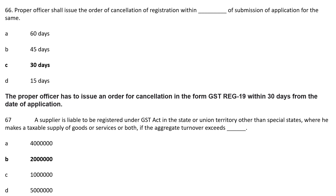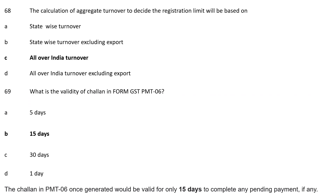Question 66: The supplier is liable to register under GST in a state or union territory other than a special state where the aggregate turnover exceeds — the limit for goods and services both is Rs 20 lakhs. Correct answer: Option B, 20 lakhs. Question 67: The calculation of aggregate turnover to decide the registration limit will be based on — Option C: all over India turnover. So, aggregate turnover is calculated on an all-India basis.